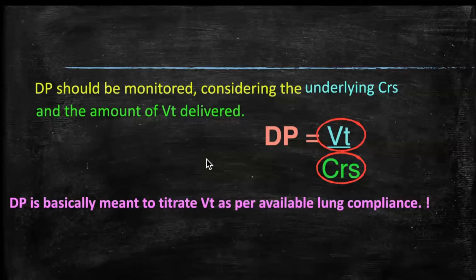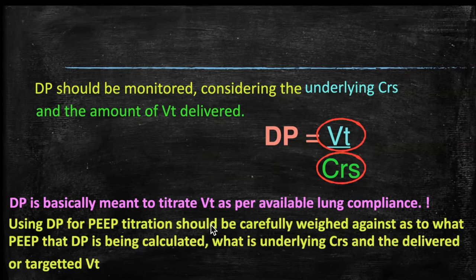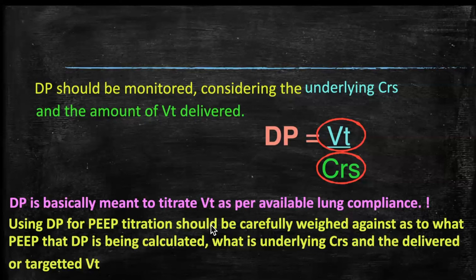Driving pressure is mainly a tool to titrate tidal volume as per available lung compliance. When using driving pressure for PEEP titration — aiming for least plateau pressure, least driving pressure, and best oxygenation before stopping titration — one must be careful, because it depends on what PEEP, underlying compliance, and tidal volume are being applied. Any change in tidal volume alters driving pressure irrespective of PEEP.